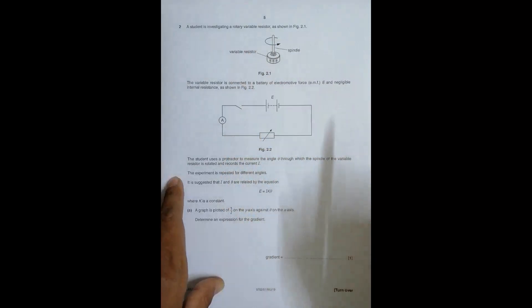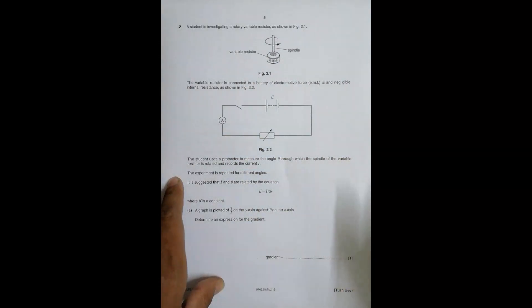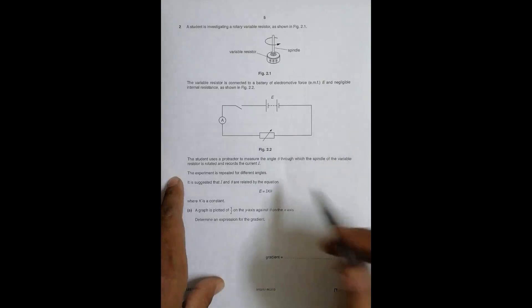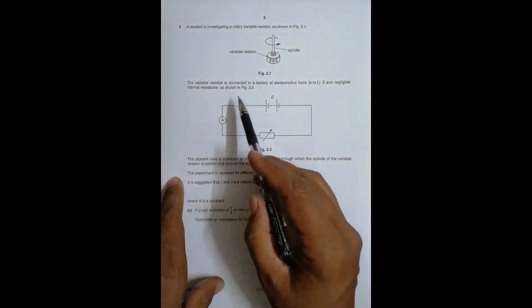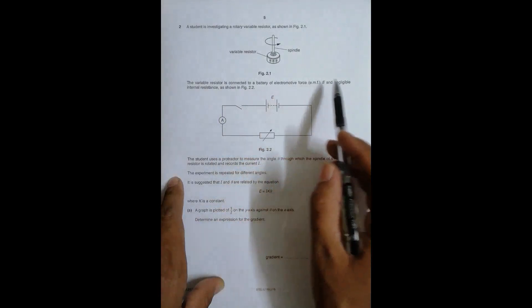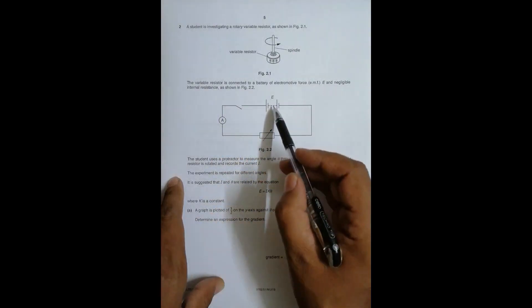This device is available in many everyday devices — for example, when we change the volume of a certain audio device, or when we change the bass and treble, we are using this same device. The resistor is connected to a battery of electromotive force EMF E and negligible internal resistance, so we need to neglect it.